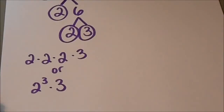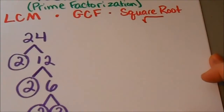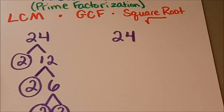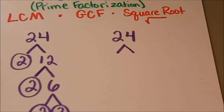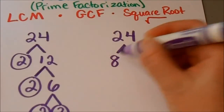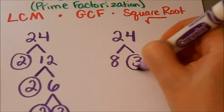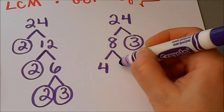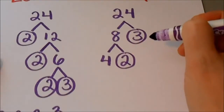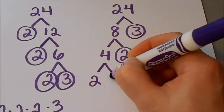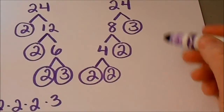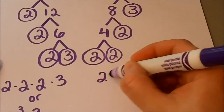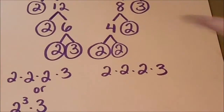I wanted to show you that 24 can be factored in a different way. I picked 2 and 12 to start with, but I'm going to pick some other numbers and show you that you can do this in different ways. 24 can also be made by multiplying 8 times 3. 3 is a prime number, so I'll circle that. For 8, I can keep going — 8 is the same as 4 times 2. 2 is a prime number, and then 4 is 2 times 2, so both of those are prime numbers. It works out to give me the same answer: 2 times 2 times 2 times 3.